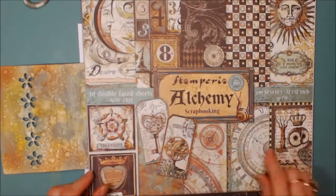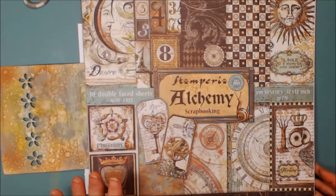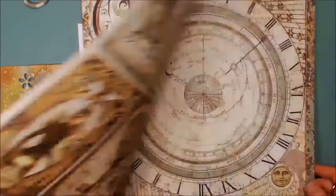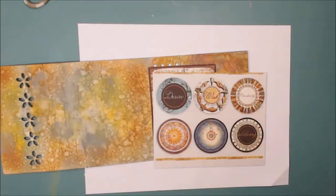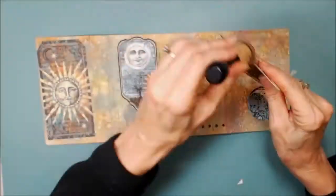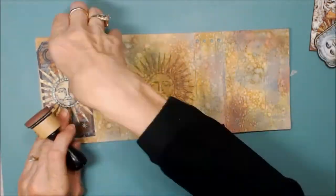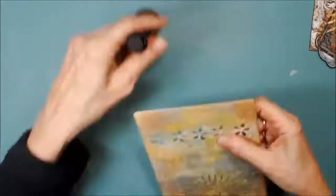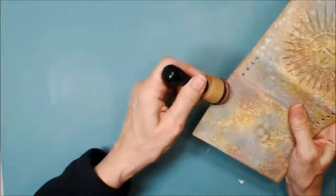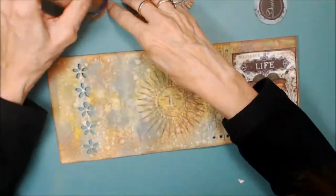Now I'm using paper from Stemperia Alchemy. This is an Italian company. Papers are really pretty. So I cut out some additional designs from the design paper. I'm inking around the edges of the mini completely, as well as all of the little cut-aparts.